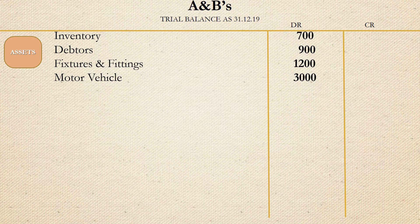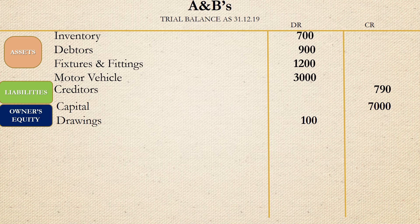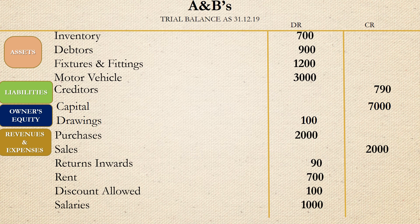There's only one liability which is creditors and the balance is credited. For owners' equity, there's capital and drawings. The balance for capital is credited and that for drawings is debited. And lastly, we have revenues and expenses: purchases, sales, returns inwards, rent, discount allowed and salaries. They all have debit balances except for sales.